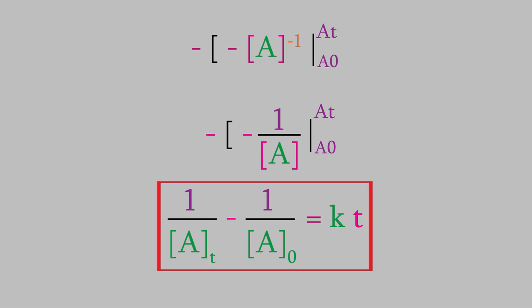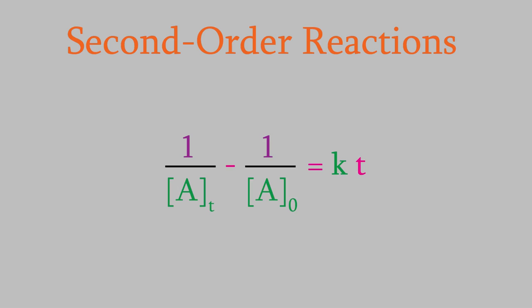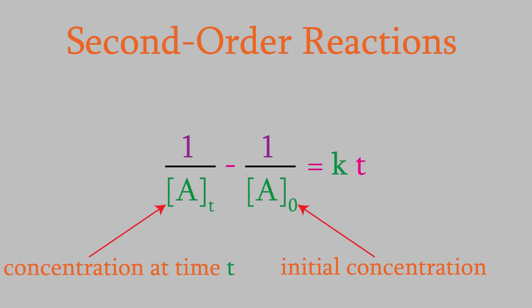And that's it. This equation ties together the beginning and ending concentrations and the amount of time that's passed. This time our equation doesn't have a logarithm in it, but all the other symbols still mean the same things — we've got the final and initial reactant concentrations, the rate constant, and the amount of time. Let's try using this to find the amount of time needed for a reaction.